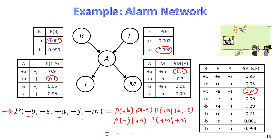You can do the same for any full-assignment joint probability, which means you can compute the entire joint distribution table — the main power of BayesNet. Instead of keeping the entire table (which for five binary variables has 2^5 = 32 entries), you compute entries on demand using the small CPT tables.